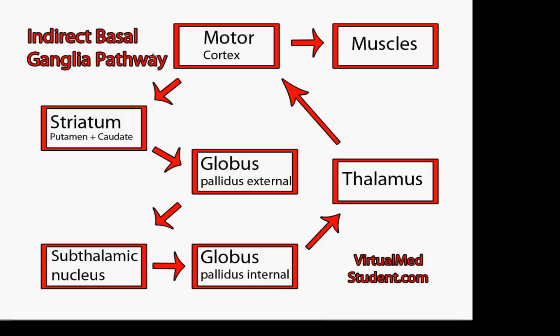Now the motor cortex, like the direct pathway, sends a stimulatory signal via glutamate, the neurotransmitter, to the striatum, just like it does in the direct pathway. But then things start to get a little bit different.